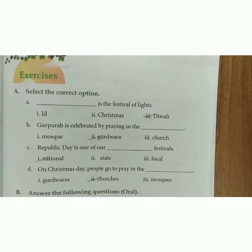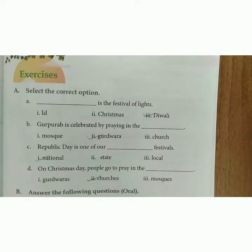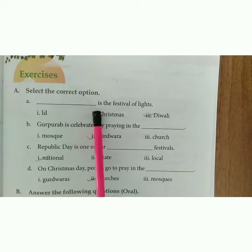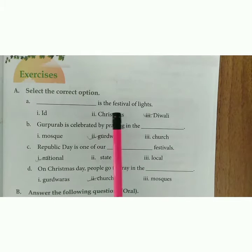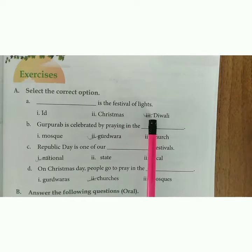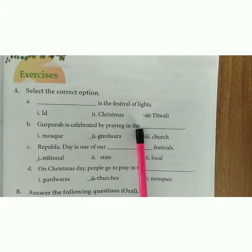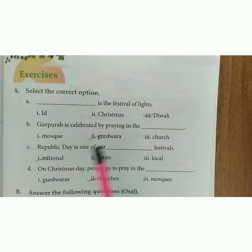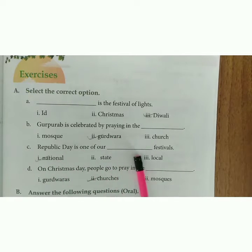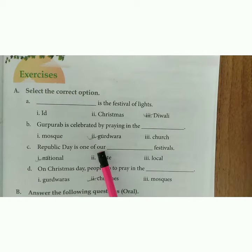Come to page number 81 — exercises of 'Our Festival.' Select the correct option. 'Dash is the festival of lights' — as we read in the lesson, which festival involves lights? The answer is Diwali. 'Guru Perv is celebrated by praying in the...' — the answer is Gurudwara. 'Republic Day is one of our Dash festival' — Republic Day is our national festival, so the answer is national.